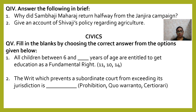Question 5: Fill in the blanks by choosing the correct answer from the options given below. The first one: All children between 6 and DASH years of age are entitled to get education as a fundamental right. Your options are 11, 10, and 14. The second question: The writ which prevents a subordinate court from exceeding its jurisdiction is DASH. Your options are: prohibition, quo-warranto, or certiorari.